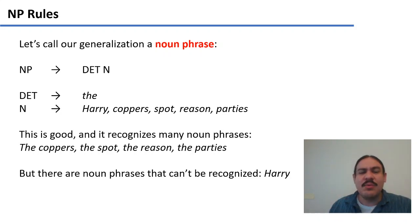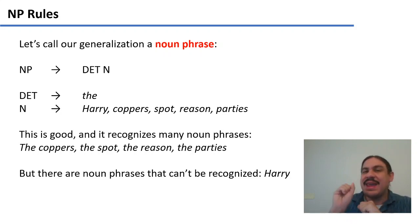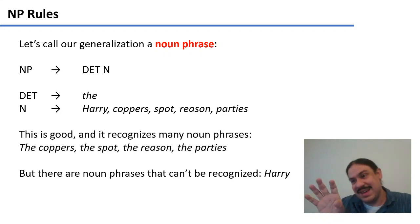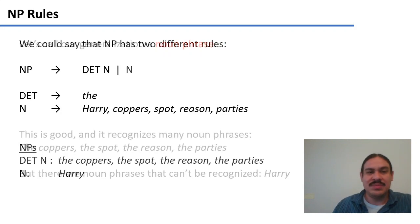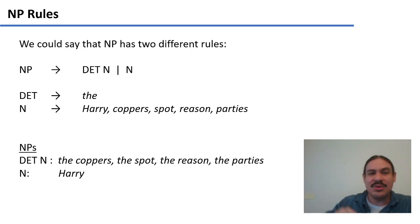So this is good. However, there are still a few phrases that this noun phrase rule would not capture. For example, if it saw the word 'Harry', it wouldn't think that it's a noun phrase, because the only thing it recognizes as a noun phrase is a determiner 'the' and a noun. So let's expand upon this rule and add another condition. Let's say a noun phrase is a determiner and a noun, or just a noun.